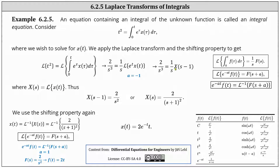Using our equation, if we solve for X(s minus one), we multiply both sides by s, giving us X(s minus one) equals two divided by s squared. This indicates X(s) is equal to two divided by the square of the quantity s plus one. To get X(s), we take X(s minus one) and change s to the quantity s plus one.